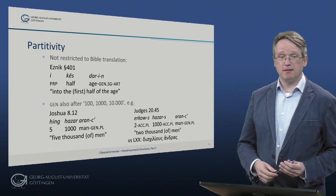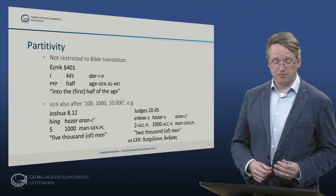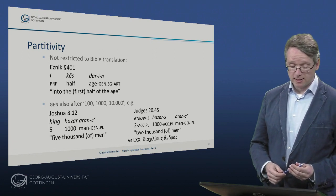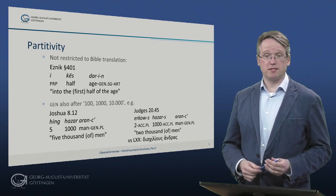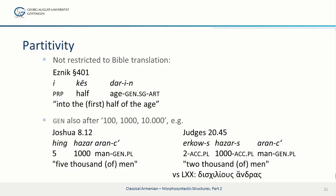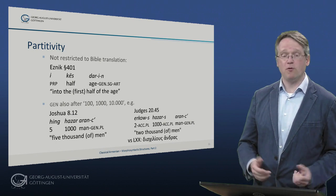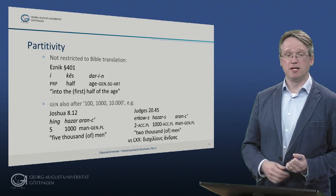The genitive is not completely excluded. There are examples like i mi nawutsʿn, 'into one of the boats', eis hentón ploion. So this translates the Greek, and the question, as always, is whether this is just a calque of the Greek or not. But it is at least not restricted to the Bible translation itself. We have, for example, in Eznik, i kes dari, 'into the first half of the age', where we have a genitive as well. The genitive is also used after higher numerals like hundred, thousand, ten thousand: hing hazar arans, 'five thousand men', or jekus hazar arans, 'two thousand men', which is different from the Greek. So probably Armenian still maintains in some instances the original use of the partitive genitive, although it is being replaced by the i plus ablative construction.